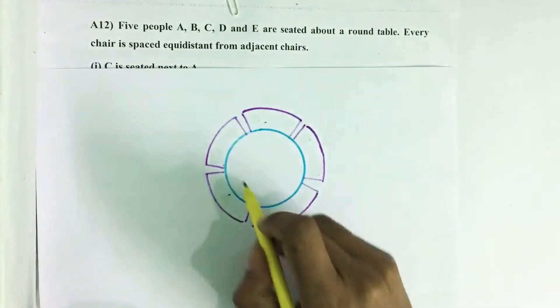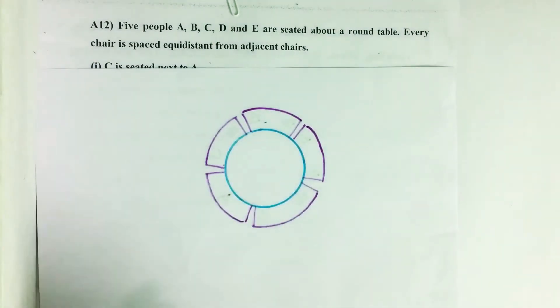So here we have a round table. Around this there are five chairs spaced equidistant from one another.